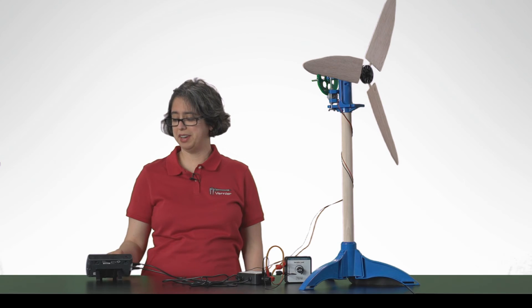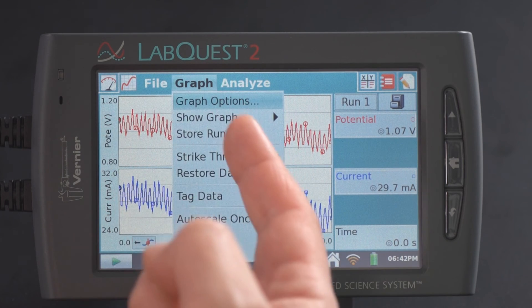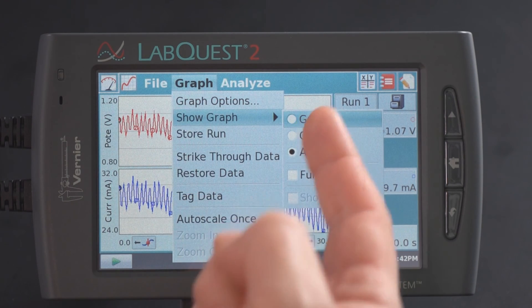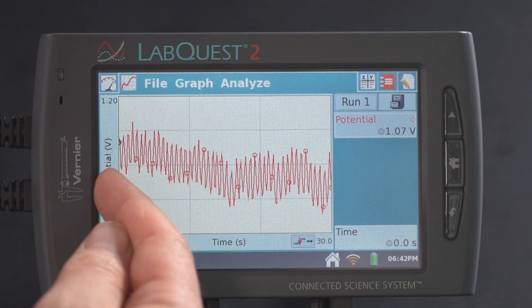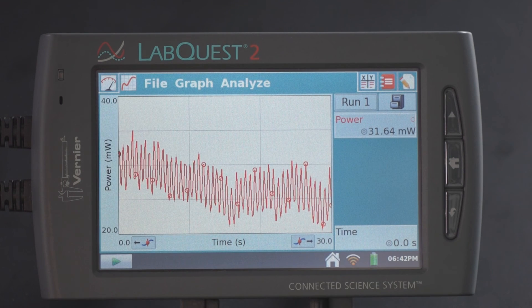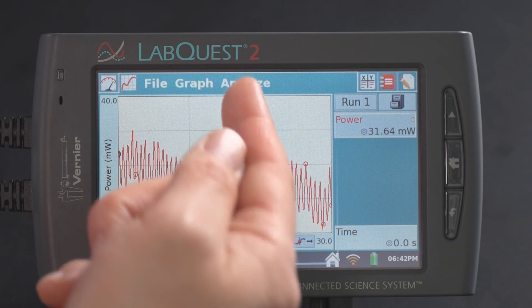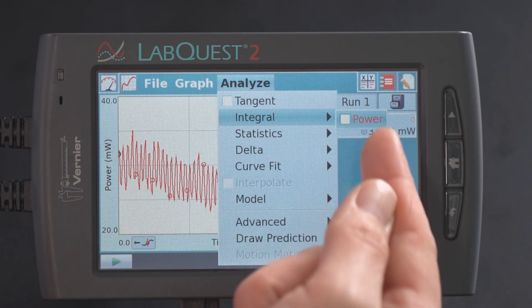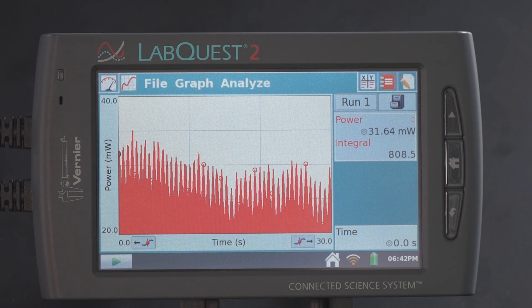That will make it easier for me to see. And what I'd really like to do here is see the total energy. So I'm going to show one graph and change this from potential versus time to power versus time. Then in order to figure out the energy, I'm going to take the integral of the power versus time. And I find that during those 30 seconds, I generated 808.5 milliwatt seconds of energy.